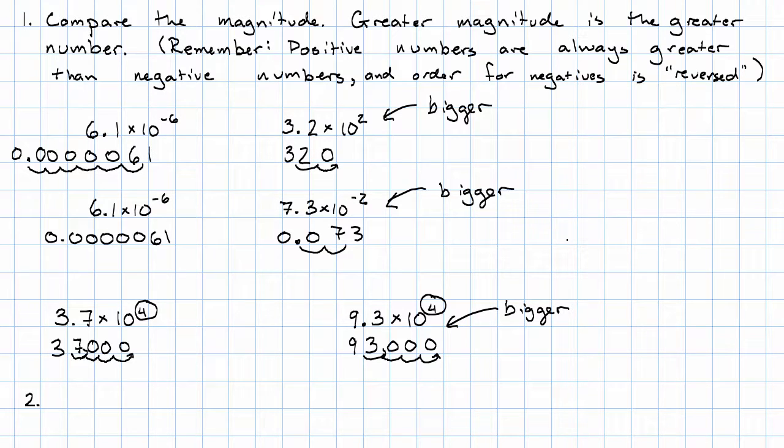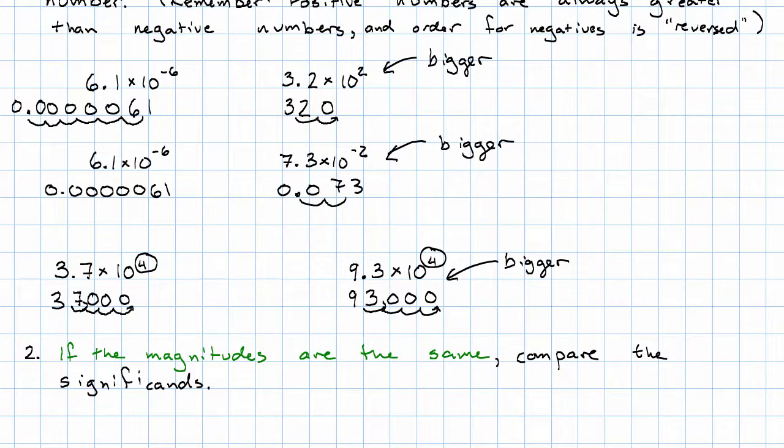In general, then, if the magnitudes are the same, then we should compare the significance. Notice, don't compare the significance if they have different magnitudes. With different magnitudes, it doesn't matter which significance is bigger. The magnitude tells you everything you need to know. But if the magnitudes are the same, then compare the significance to decide which one is greater.